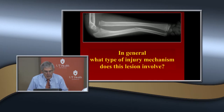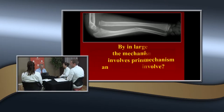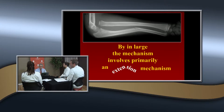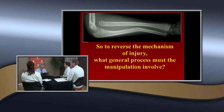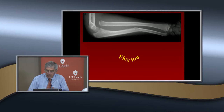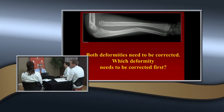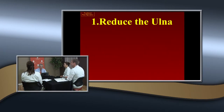Here comes our patient with a type 1 injury. The general mechanism was hyperextension — it's an extension injury. So what is going to be the procedure to reverse that? You're going to have to flex. The general process is going to involve flexion. The first thing you focus on is the ulna diaphysis — you've got to reduce it.